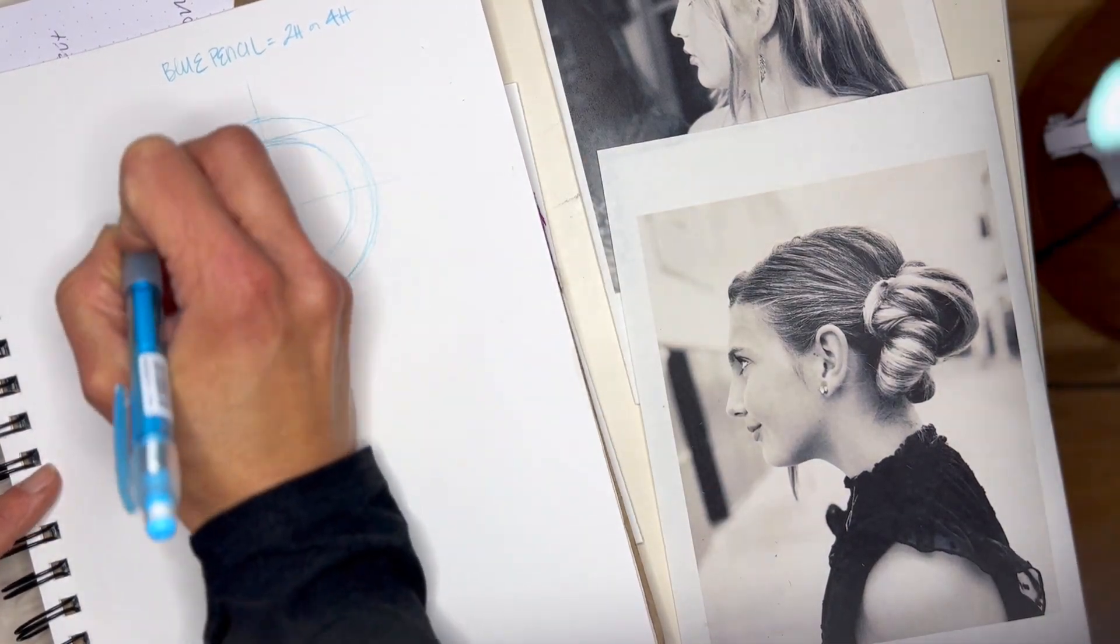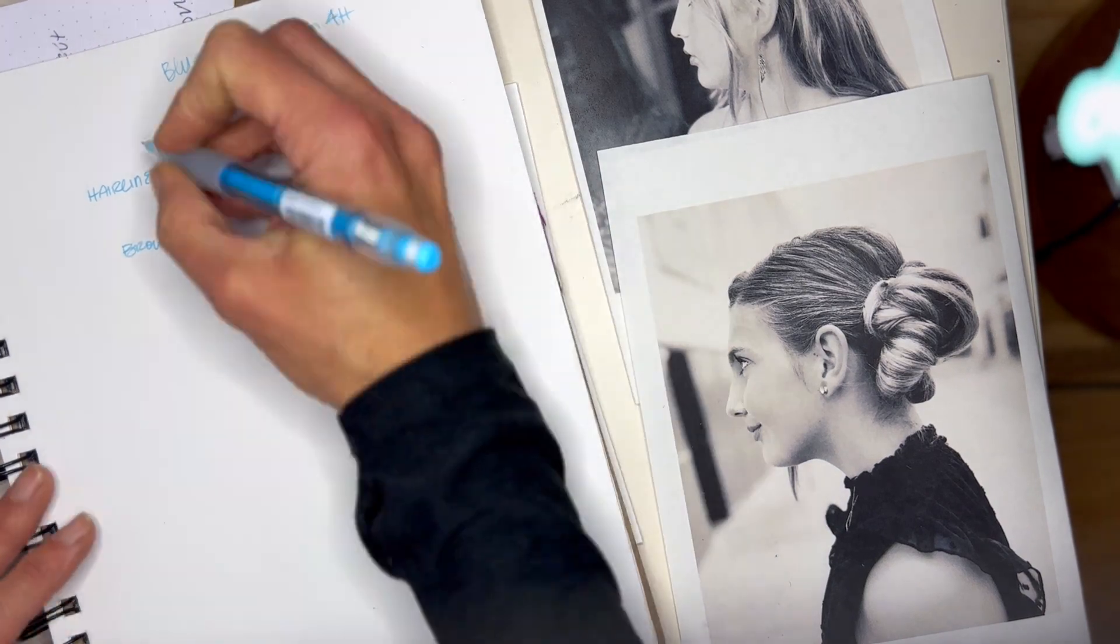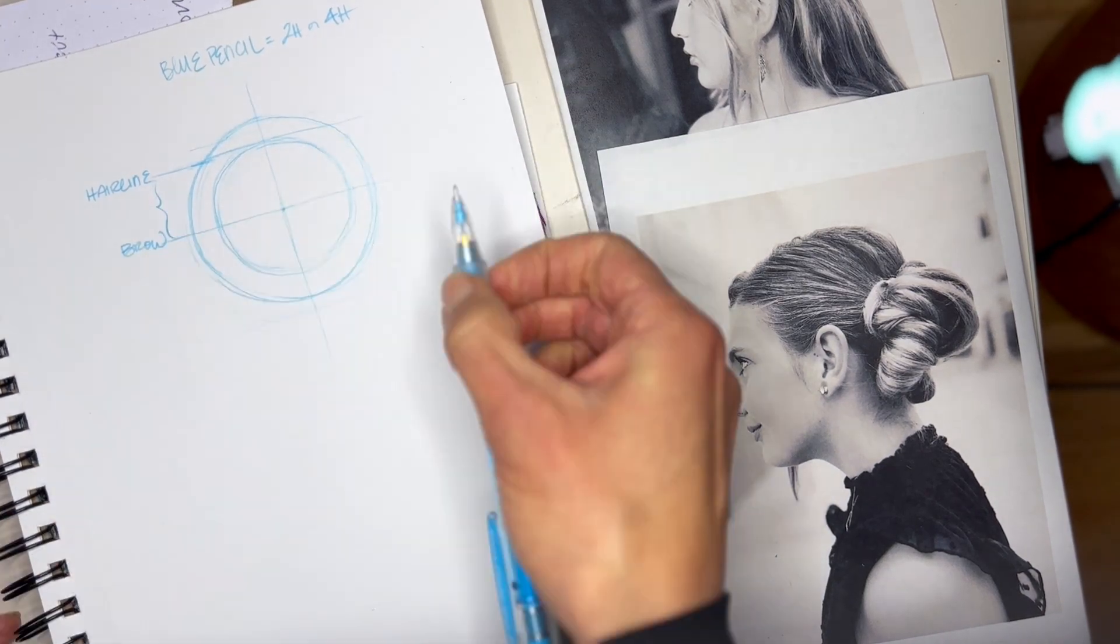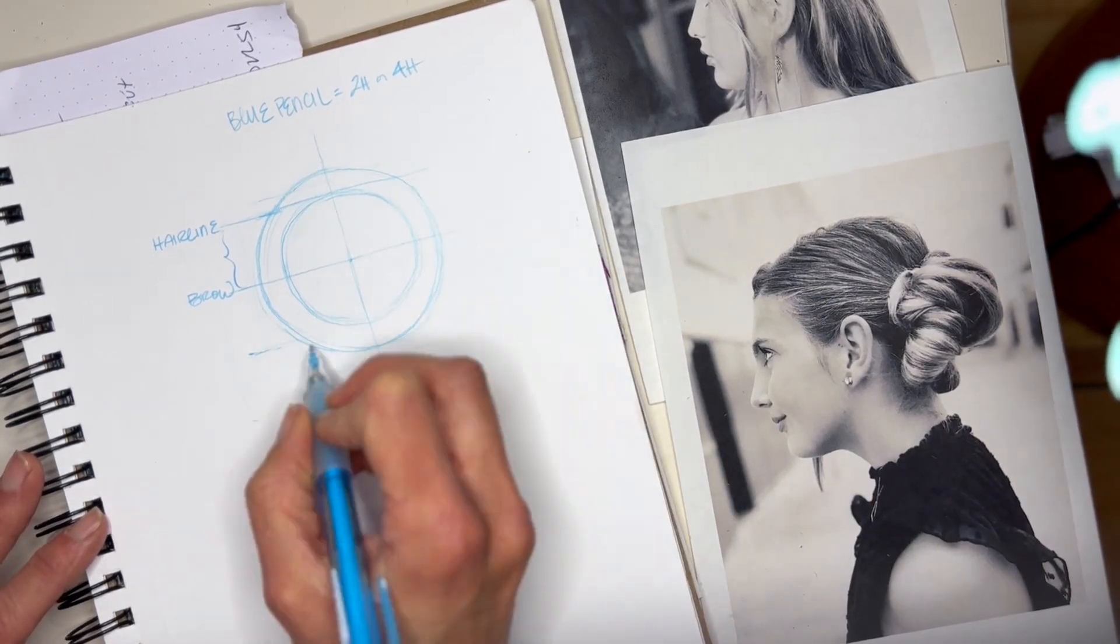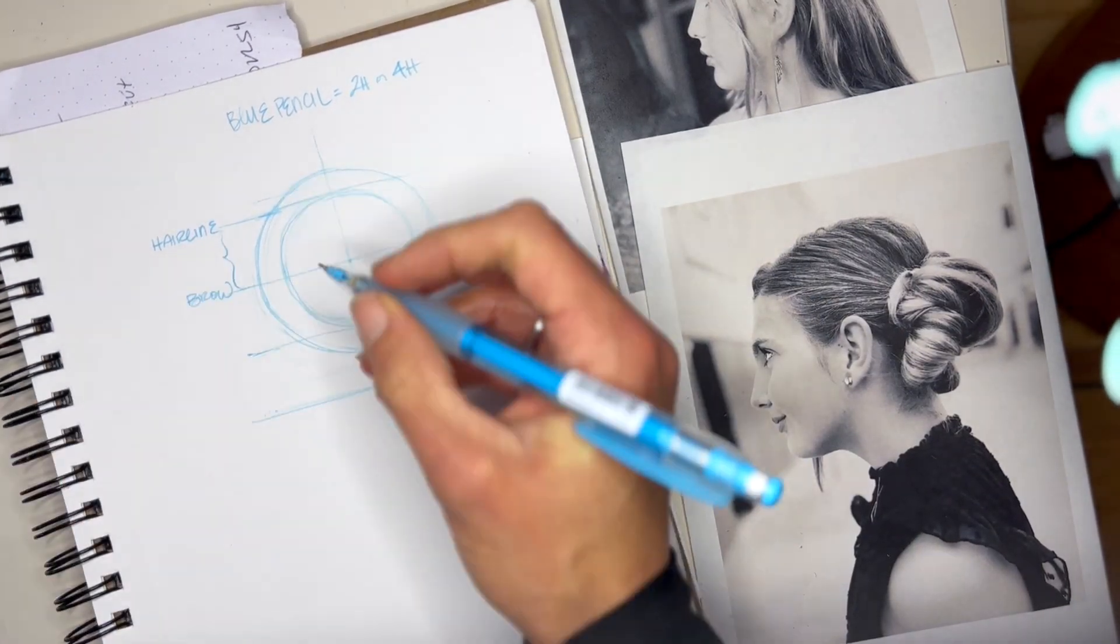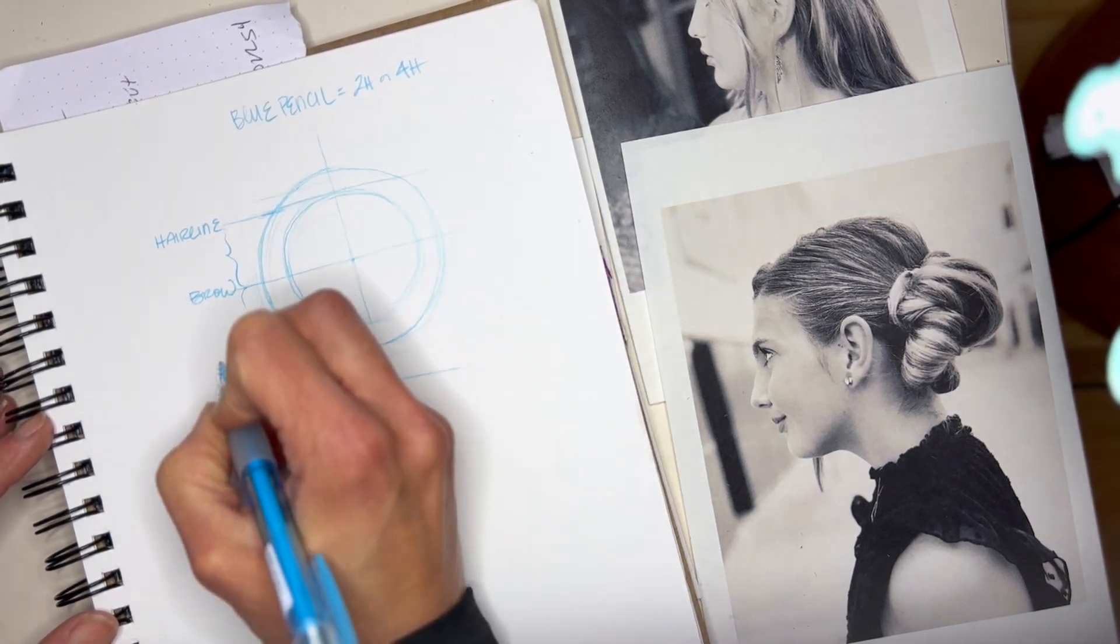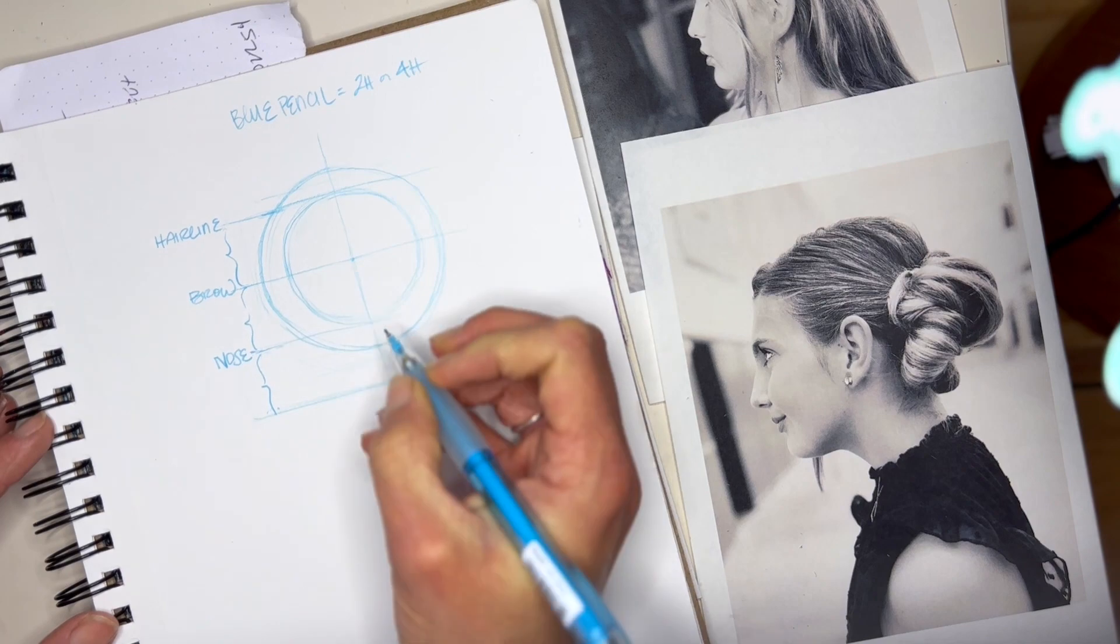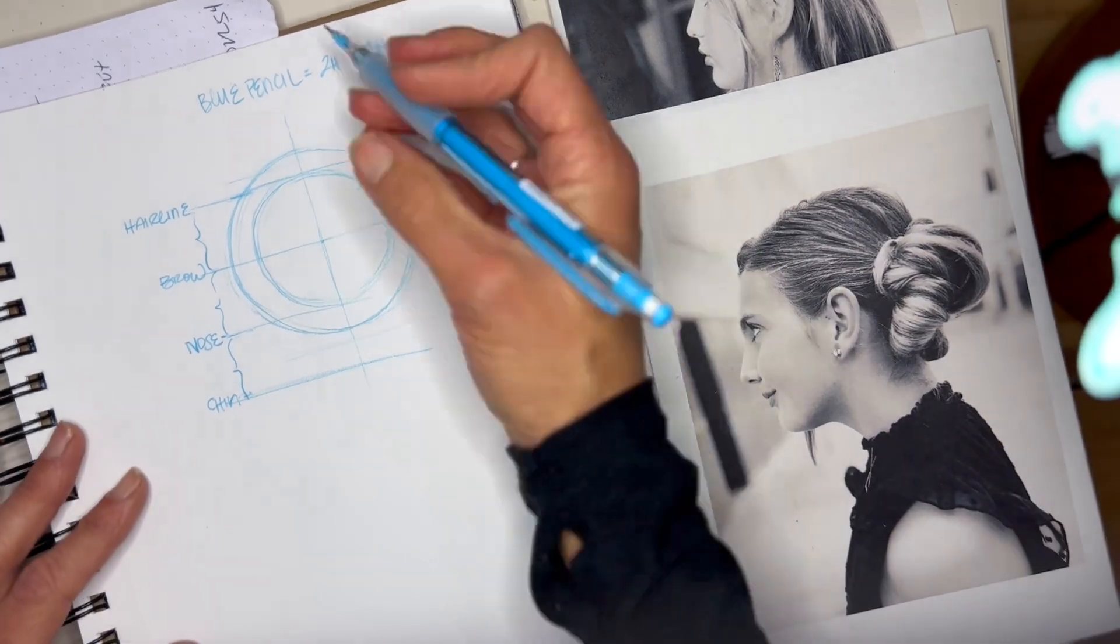The hairline and brow line, the distance between the two is important because that will also determine the distance between the brow and the nose and the distance between the nose and the chin. The distance between the hairline and the brow, the brow and the nose, and the nose and the chin are equal to each other.